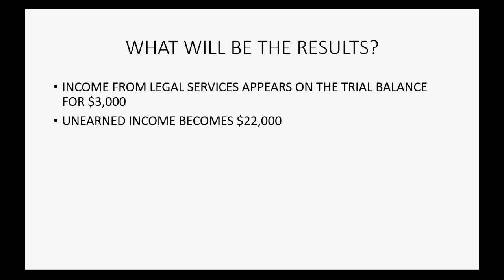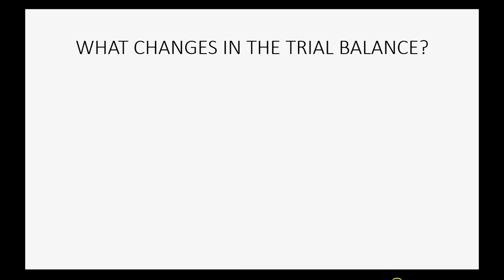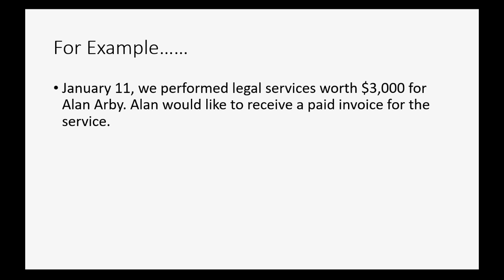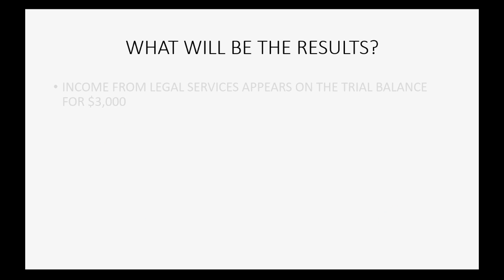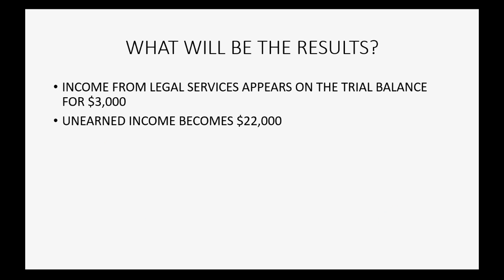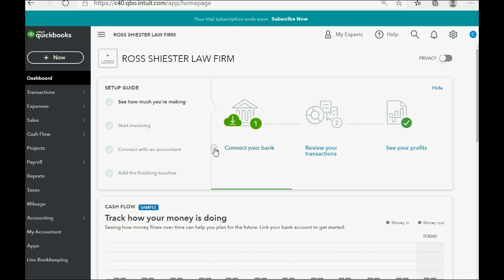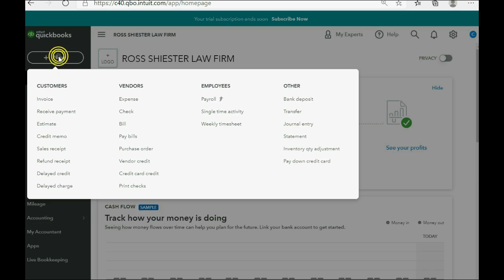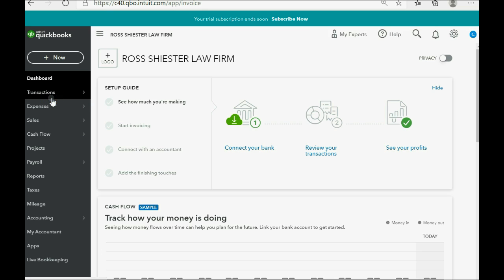And we will record this event on an invoice. The date was January 11th, $3,000, and these will be the changes. So when we create an invoice, we go to the top left and click the plus sign. Go to the left column and click Invoice.